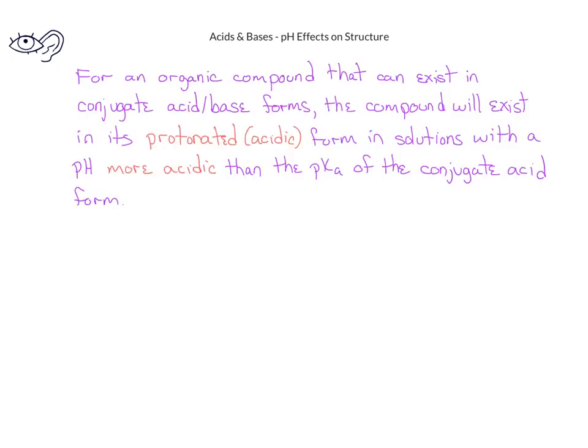There are many organic compounds that can exist in either their conjugate acid or conjugate base form. One of the primary situations in which they can change their form will be based on the pH of the solution in which they exist. An example of this would be amino acids in biological systems. The pH of the solution can determine the form the amino acid will be found in. In general, the rule of thumb we use will say that for an organic compound that can exist as a conjugate acid-base pair, the compound will exist in its protonated or acidic form in solutions with a pH that is more acidic than the pKa of the conjugate acid.